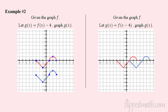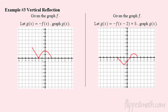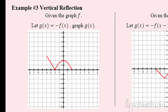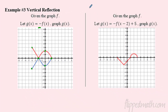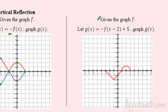Now let's do some reflections. If I put a negative out in front, that causes a vertical reflection — I flip the shape over the x-axis. Check it out: a y-value of 2 went to negative 2. Points on the x-axis don't flip because they're already there. A point up at positive 3 gets flipped down to negative 3. It's just a reflection over the x-axis, a vertical reflection.